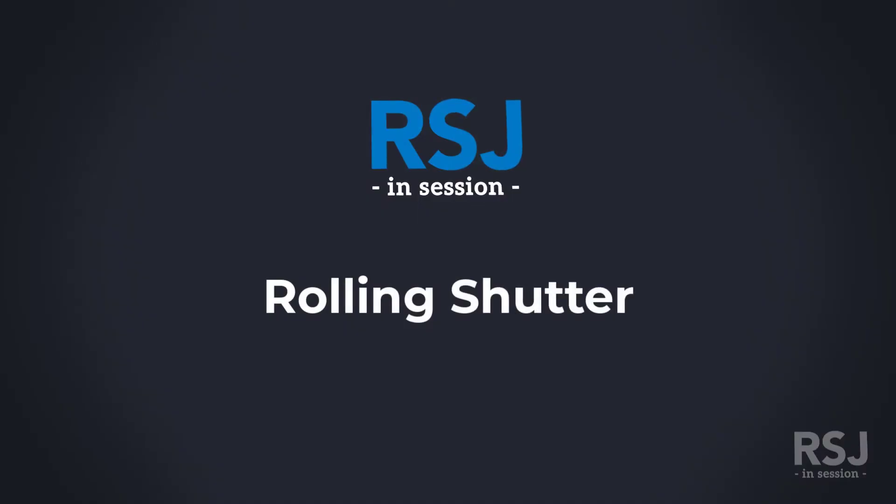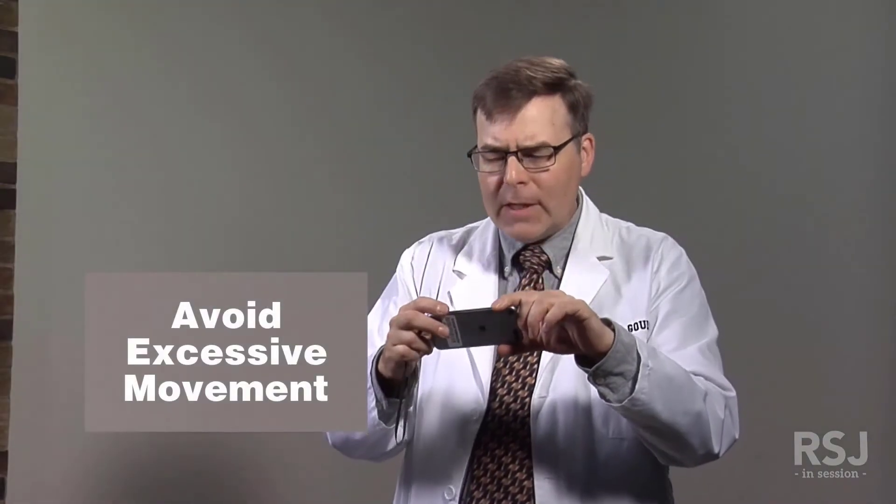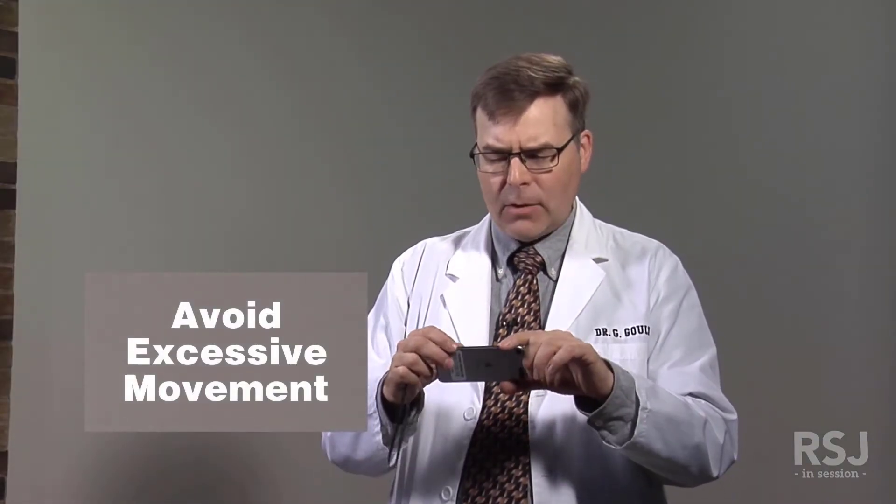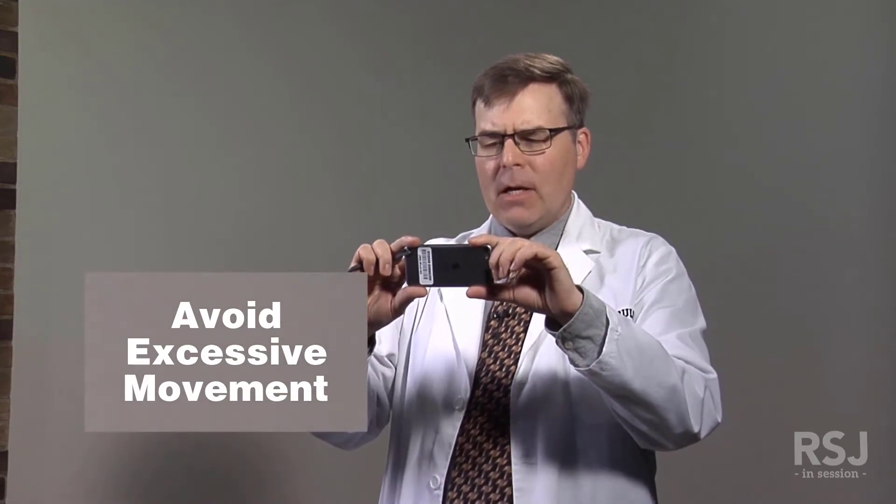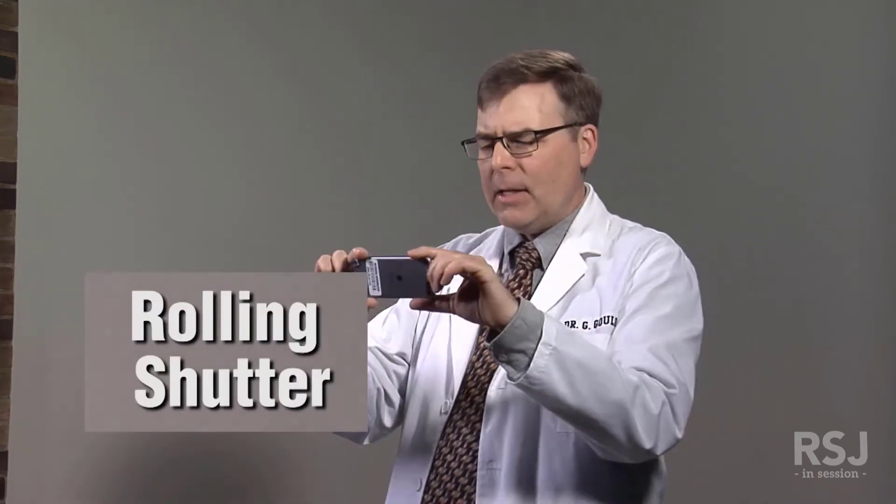When shooting, we don't want a lot of fast panning or tilting. When you do a fast pan, there's something called rolling shutter. These devices and DSLRs use a CMOS chip that records from the top down. If you move it quickly, it doesn't scan the bottom part fast enough.